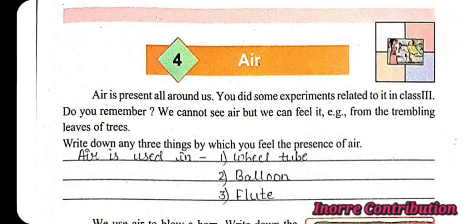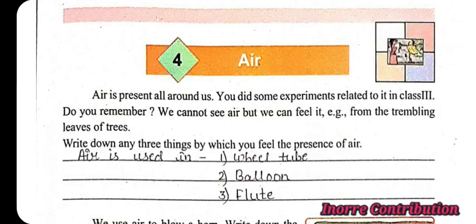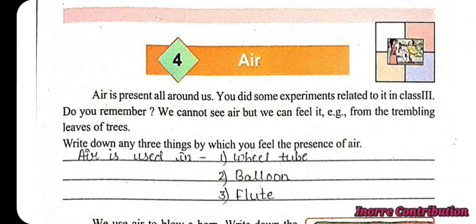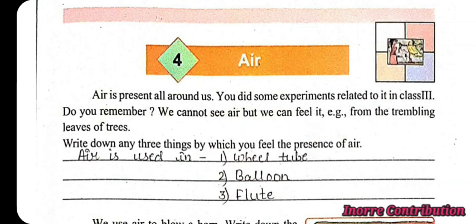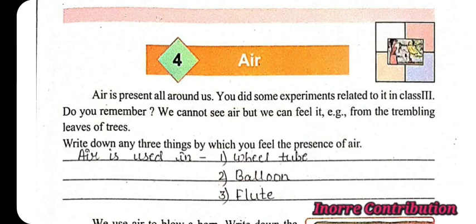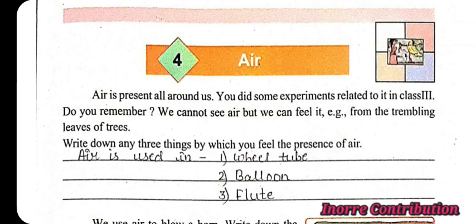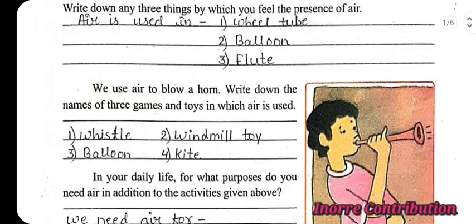EBS Chapter 4: Air. Here comes the chapter question and answer. First one: write down any three things by which you feel the presence of air. Answer: air is used in wheel tube, balloon, and flute. We use air to blow a horn.